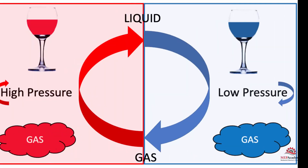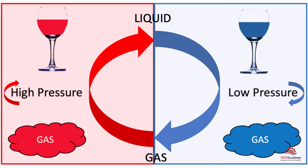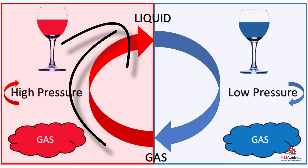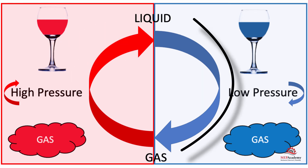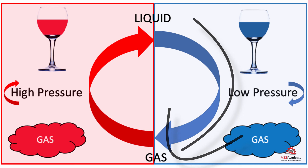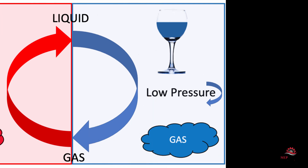This refrigeration cycle is a continuous changing of the state of the refrigerant — from gas to liquid, and then liquid back to gas, over and over again, while moving heat around.